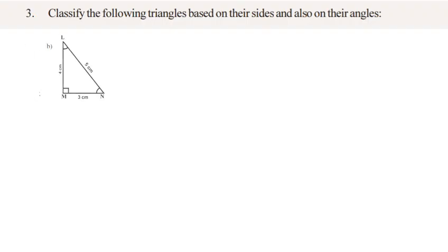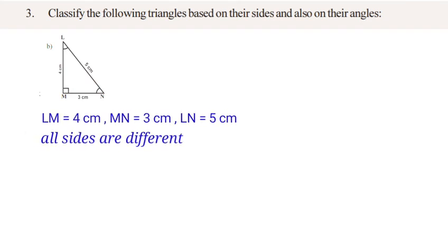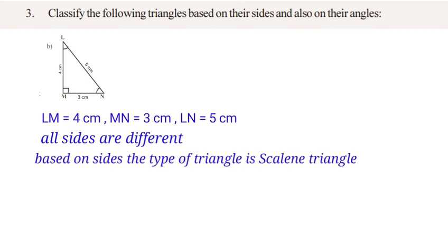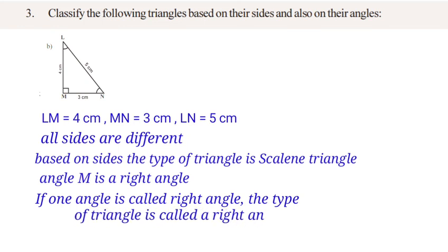Next, problem 3B: triangle LMN. Side LM is equal to 4 cm, side MN is equal to 3 cm, side LN is equal to 5 cm. All sides are different, so based on sides it is a Scalene Triangle. Angle M is a right angle, so based on angles the type of triangle is called a Right Angle Triangle.